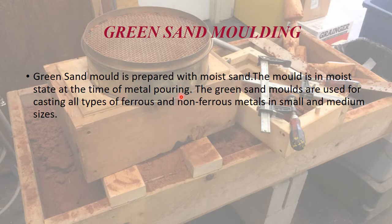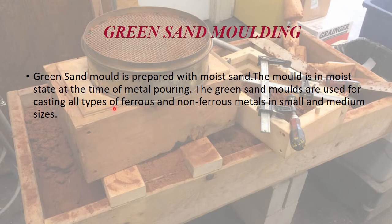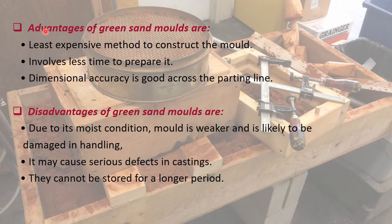These types of sand molds are used for casting nearly all types of ferrous and non-ferrous metals in small and medium sizes. Any kind of small and medium size castings can be done with the help of ferrous and non-ferrous metals using green sand molding.